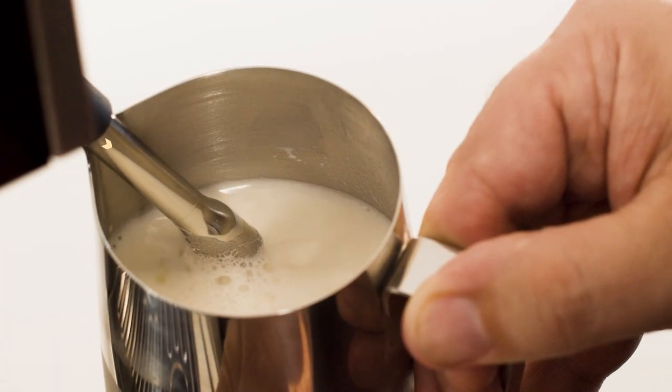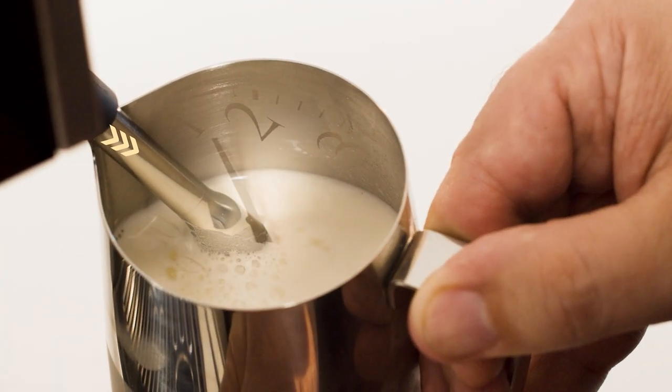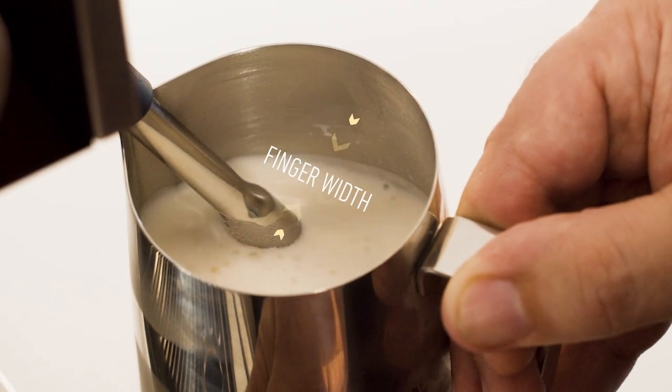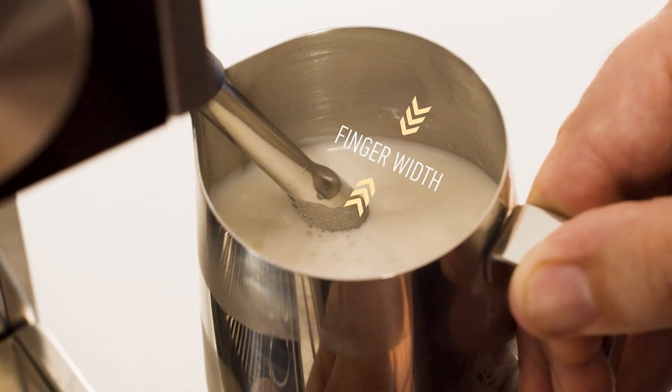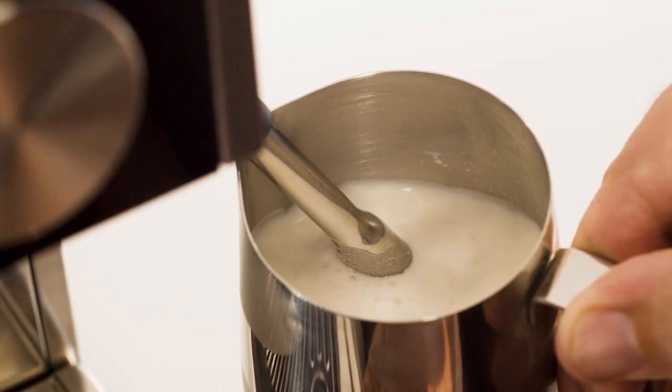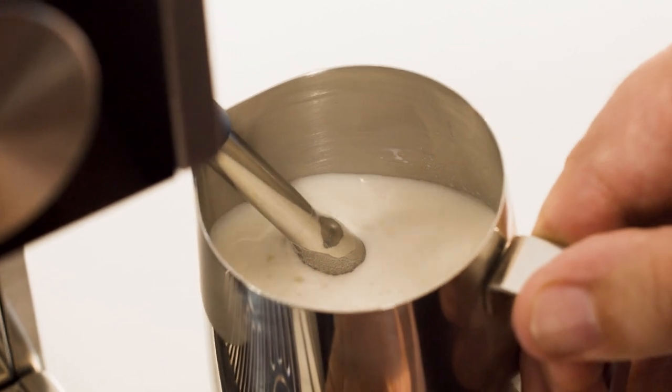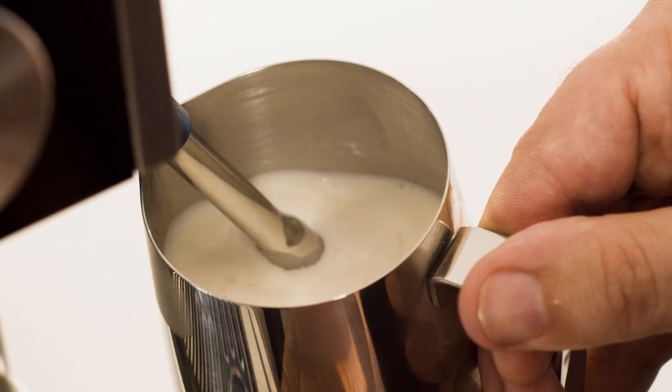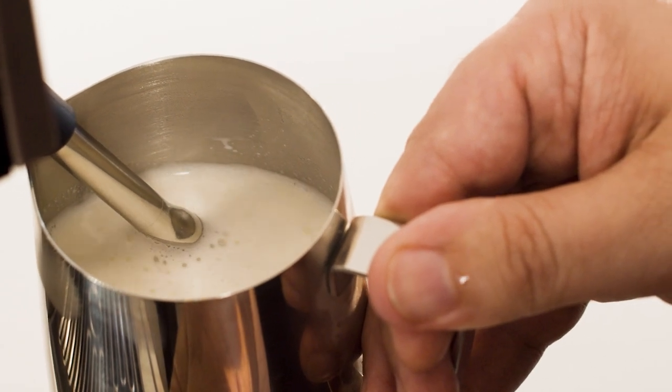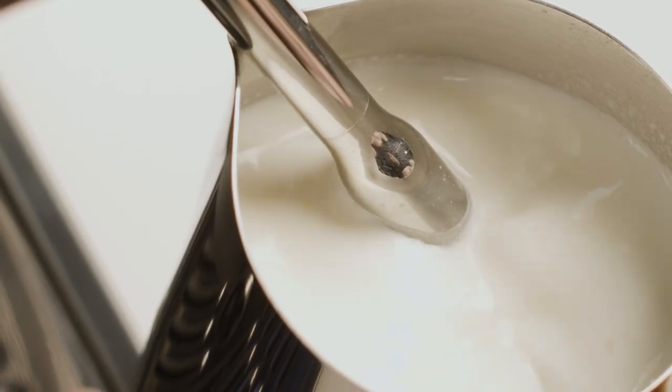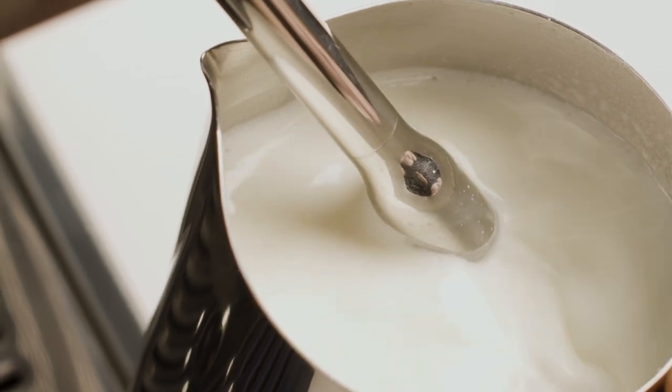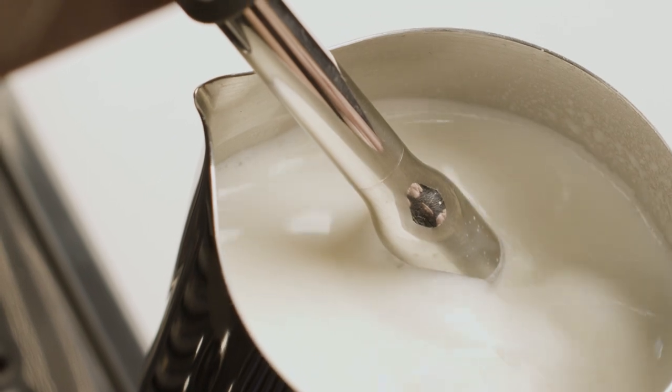The steam wand should be at 12 o'clock and the steam wand tip should be at 3 o'clock. There should be about a finger width from the edge of the milk jug and the steam tip should sit just below the surface of the milk. If you're using the right technique, it should make a smooth hissing noise and the milk should spin in a whirlpool action. As the milk level rises, lower the jug to keep the tip just below the surface. The milk is ready when the milk jug becomes too hot to touch.